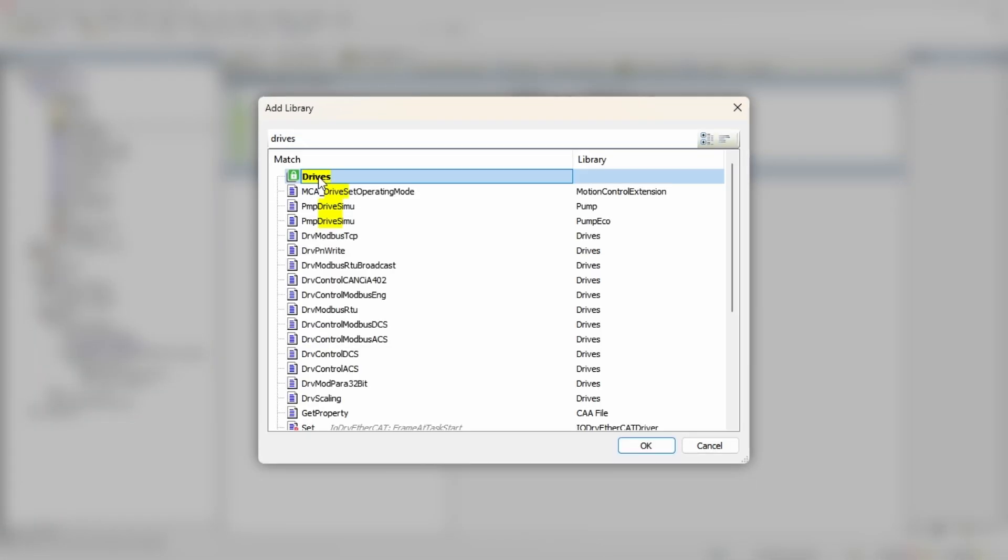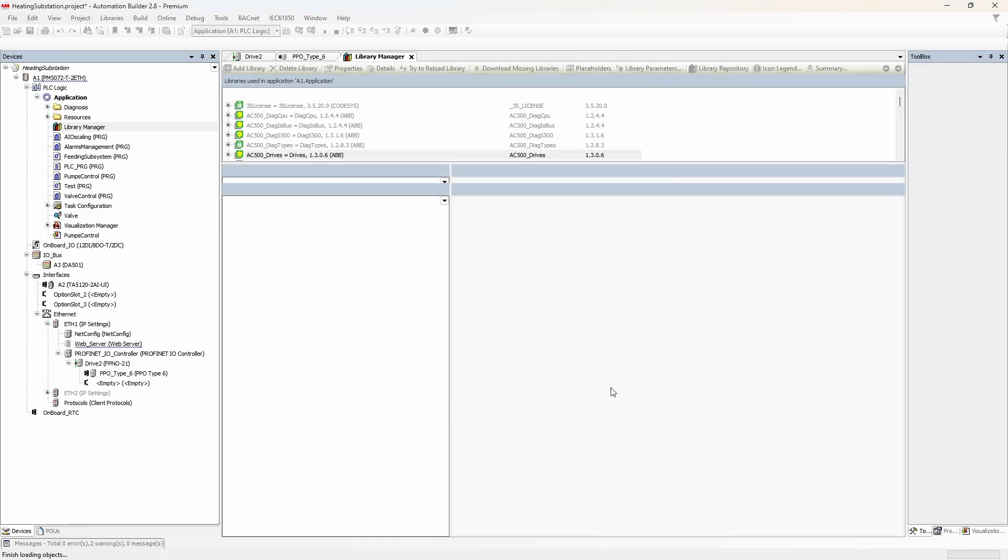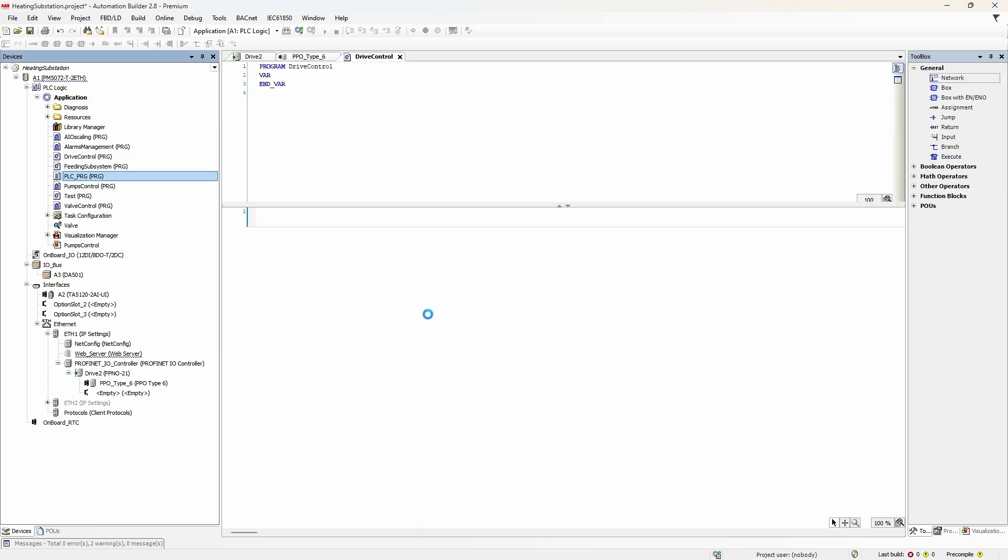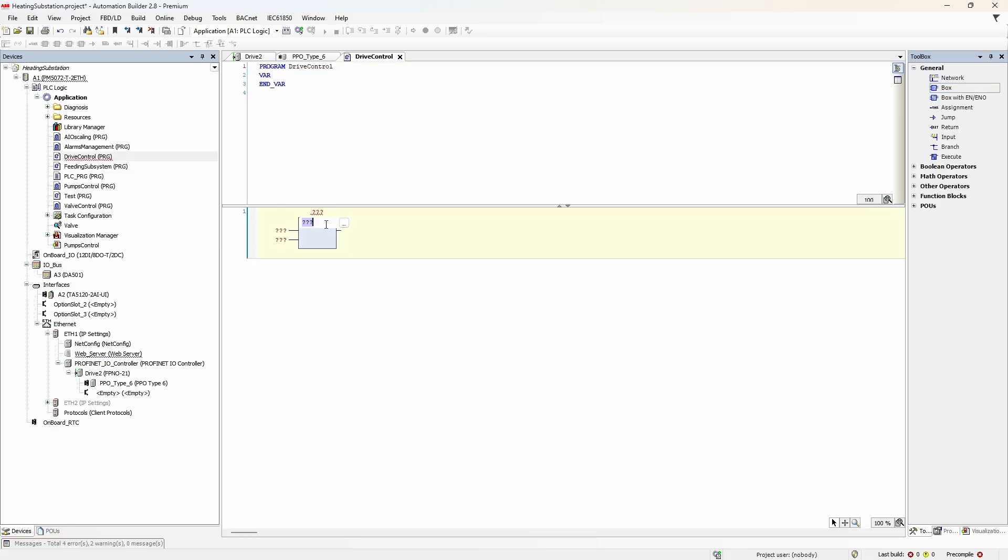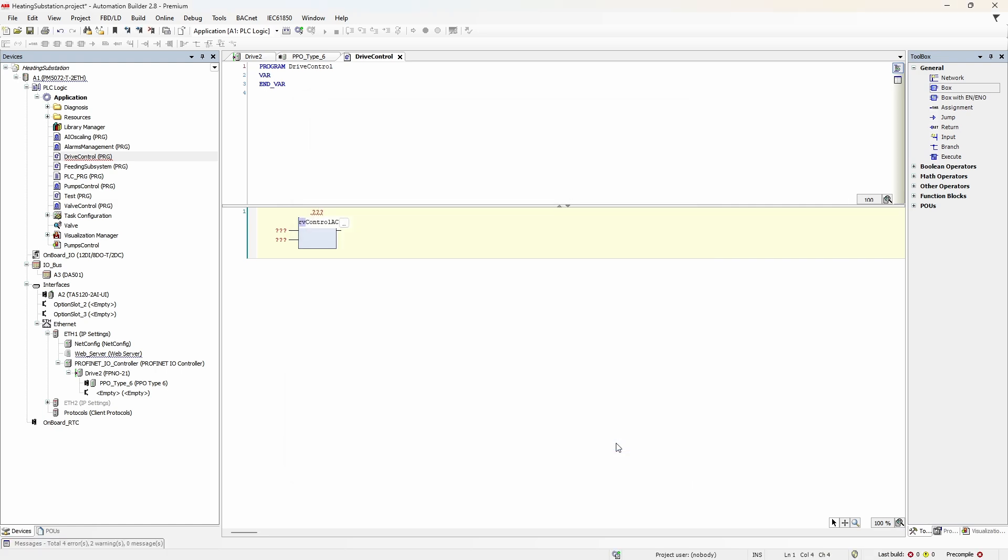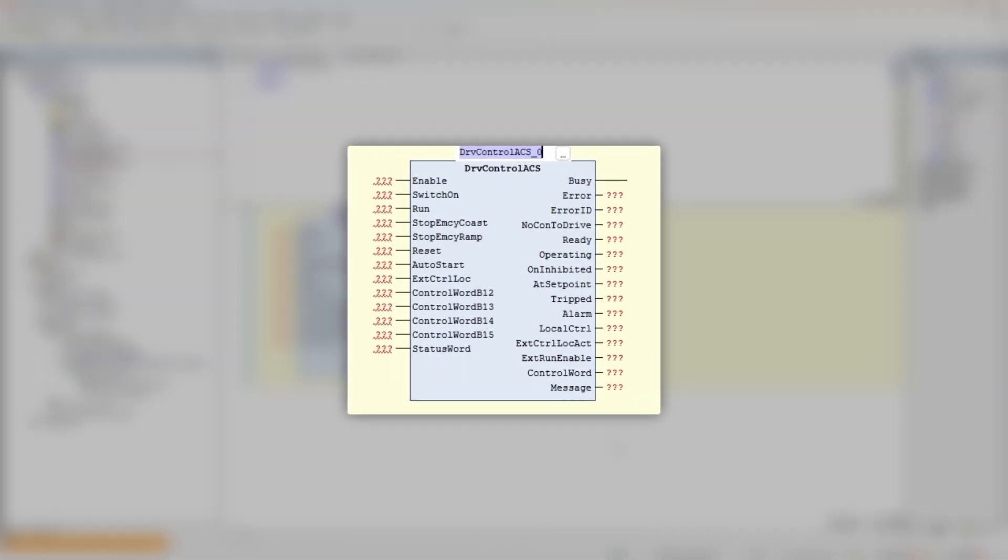Now let's make the drive spin a motor. First go to library manager and add a library called Drives. Then create a separate program which will host drive control logic. Don't forget to call it in PLC_PRG. Add a function block DRV_CONTROL_ACS from the Drives library. Whoa, quite a beast, right? We need to step aside now and talk about drive communication profiles.